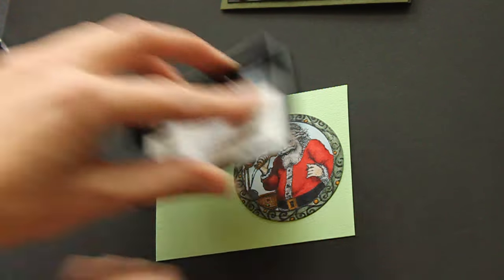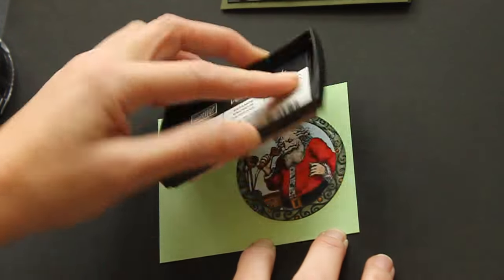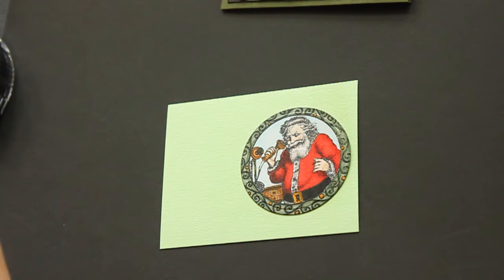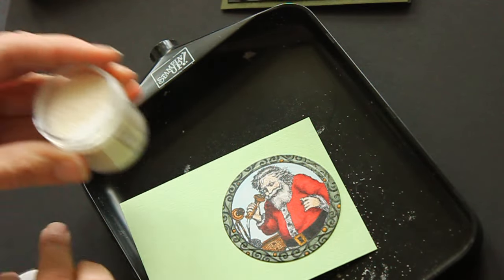Then add Versamark over the entire piece. You can use any embossing ink. And then add embossing powder over it. It goes faster if you use ultra thick embossing powder.